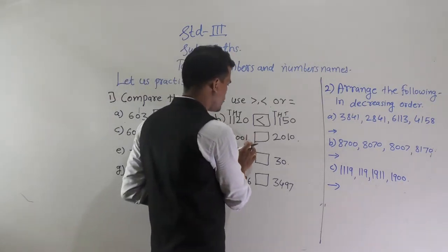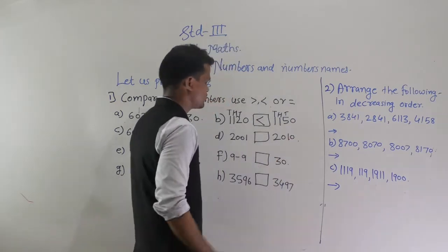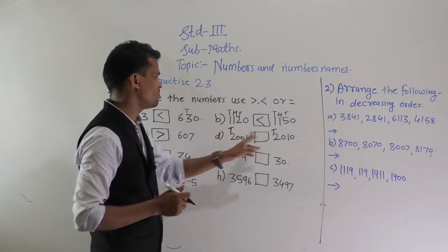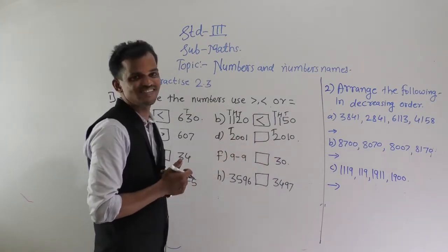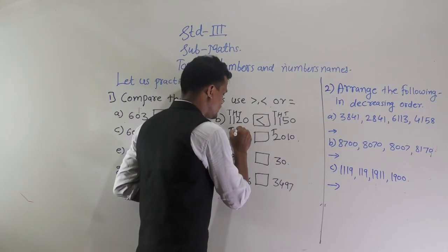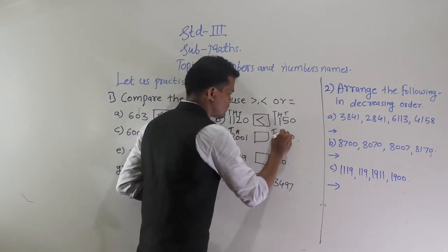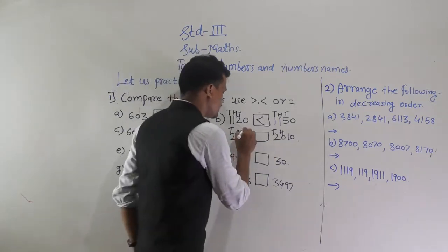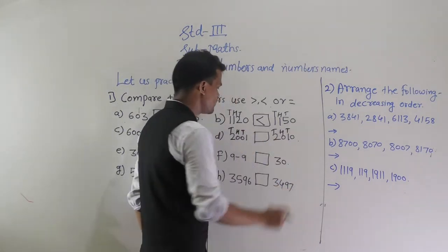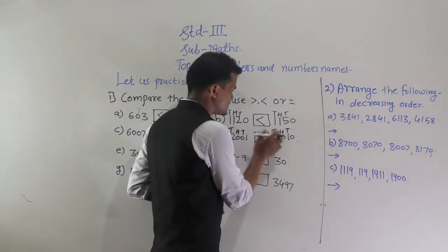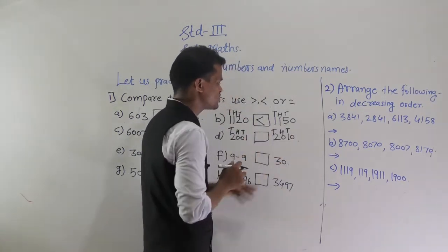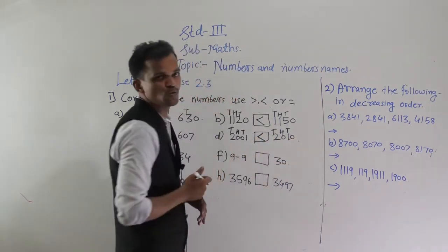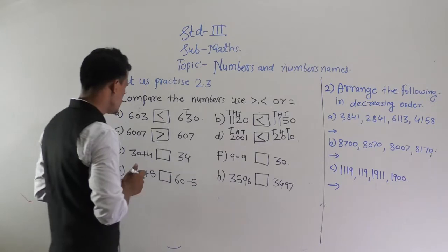Next, compare 2001 and 2010. Both are 4-digit numbers. First compare the thousands place digit — same in both. Then compare the hundreds place digit — also same. Then compare the tens place: here 0 is at the tens place and here 1 is at the tens place. Since 1 is greater than 0, 2010 is greater than 2001.